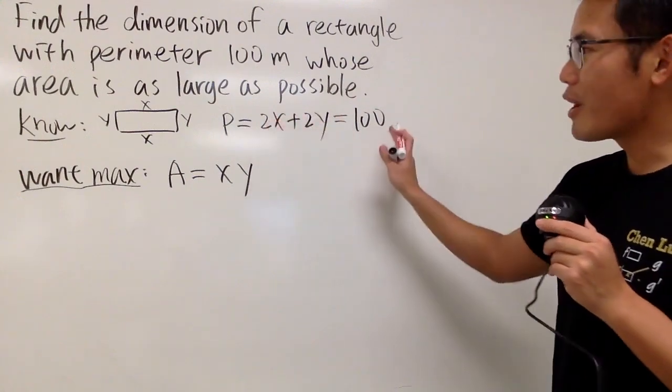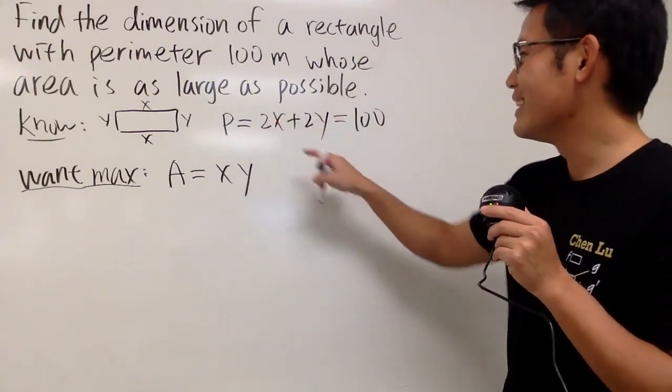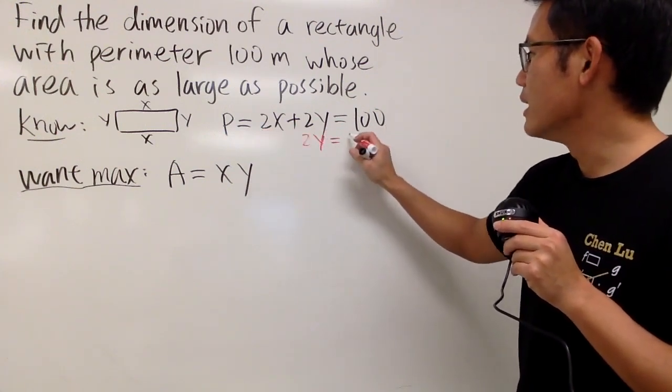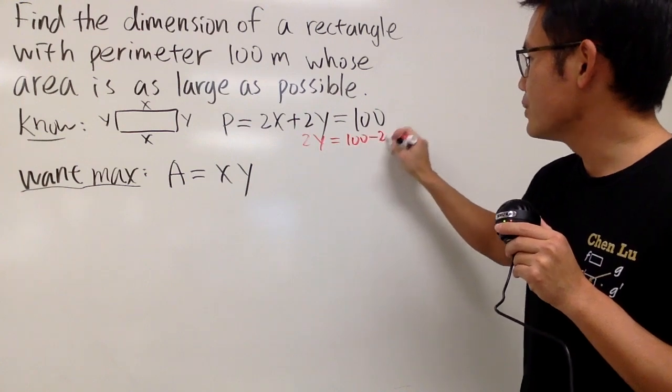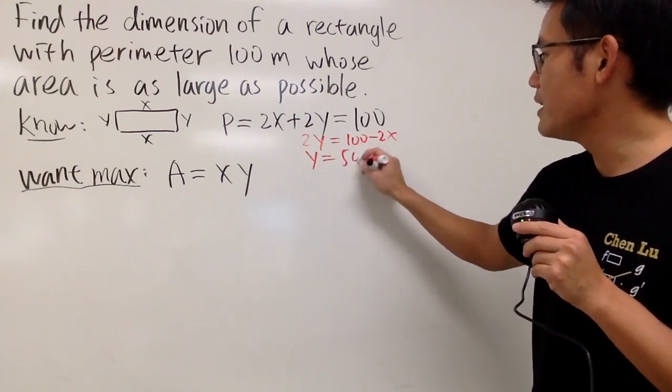That's okay. Look here, and isolate one of them. Let's just go ahead and isolate y. I'm going to minus 2x on both sides, so we get 2y equals 100 minus 2x, and divide everybody by 2, so y is equal to 50 minus x.